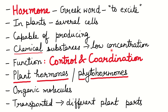These chemical substances exist in very low concentrations, and they function in control and coordination. These substances are called plant hormones or phytohormones — 'phyto' meaning plant. Plant hormones are organic molecules, meaning they contain carbon, and they are transported to different plant parts. Not all chemicals in plants are called hormones — only those in low concentration that function in control and coordination.